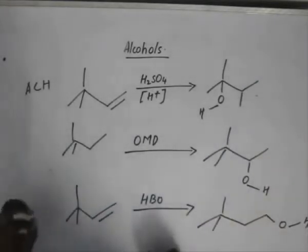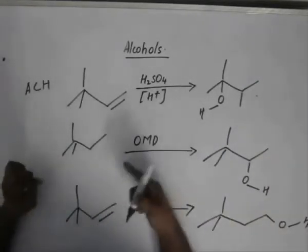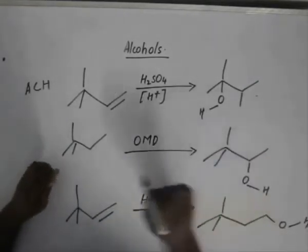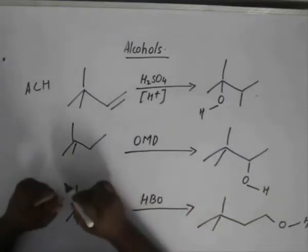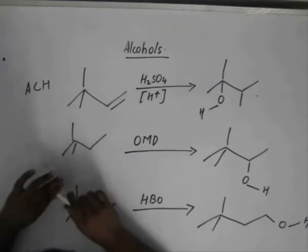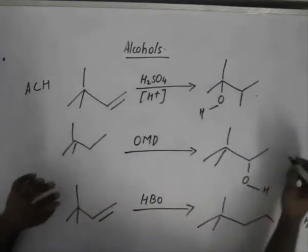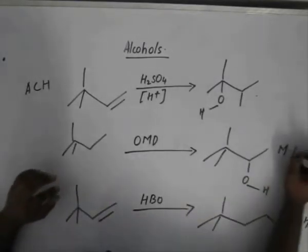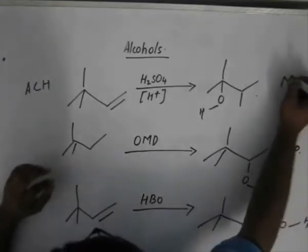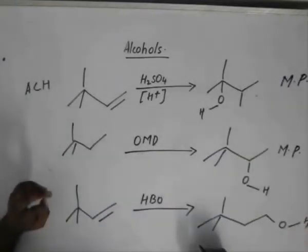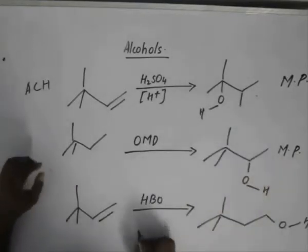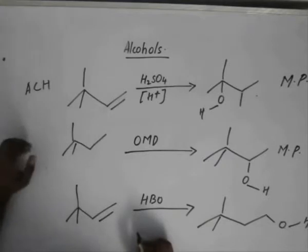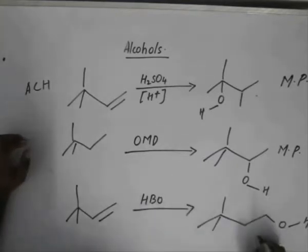So, this is the rearranged product that we get. In OMD, we do not get the rearranged product because there is no rearrangement. It follows Markonikov's rule and we get a Markonikov product. Here also we get a Markonikov product, but there is no rearrangement. And in case of HBO, hydroboration oxidation, we get an anti-Markonikov product.